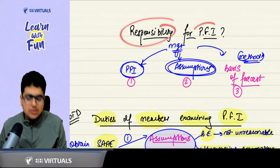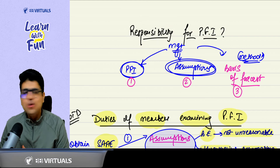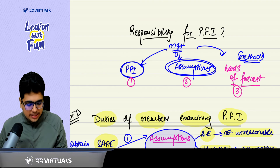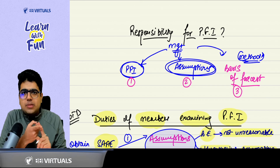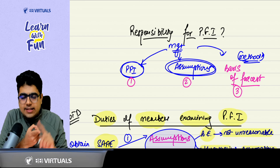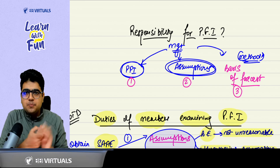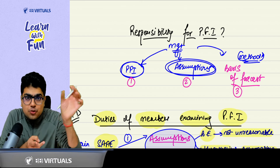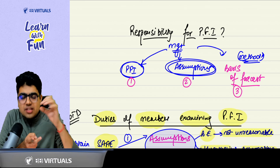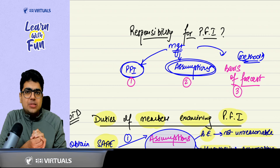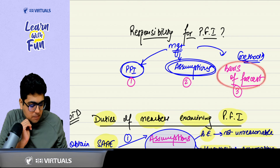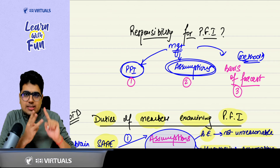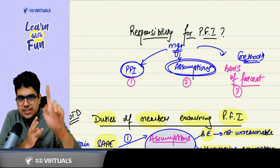Who is responsible for preparing prospective financial information? Just as management is responsible for preparing financial statements, similarly, management is responsible here. Management is responsible for what information will be there and that it will be properly presented and disclosed, for the assumptions, and for the methodology and basis of the forecast — how you will arrive at and prepare the PFI. For these three things — PFI, assumptions, and basis of forecast — management is responsible.